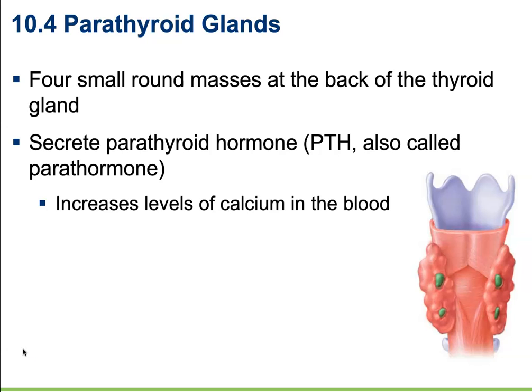PTH stimulates osteoclasts to break down bone, releasing calcium into the blood. It also stimulates the kidneys to remove calcium from the fluid destined to become urine and return it to the blood. It stimulates the rate at which calcium is absorbed from the gastrointestinal tract, and it inhibits osteoblasts.